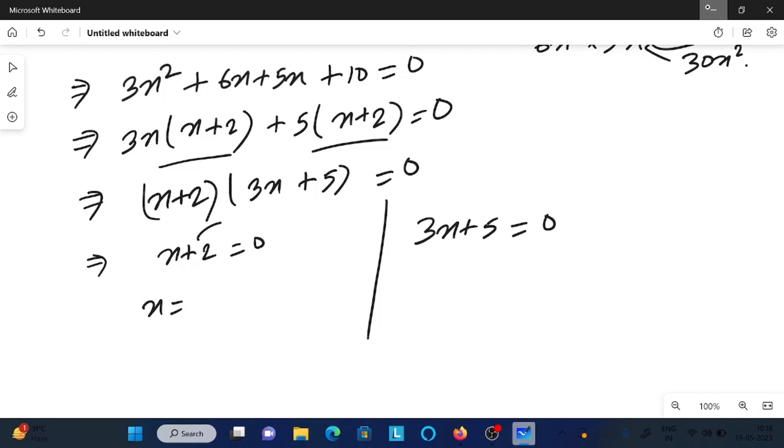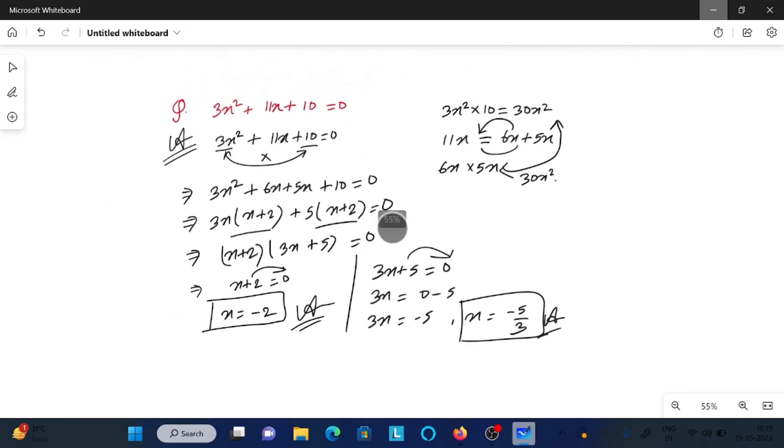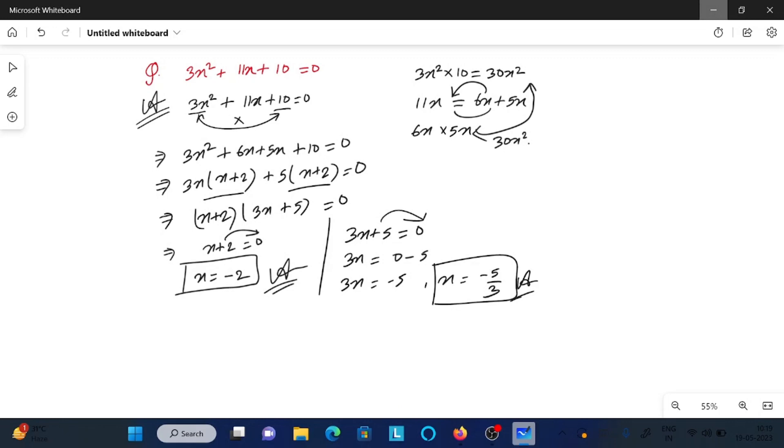Then we can write x plus 2 equal to 0, and 3x plus 5 equal to 0. So x equals 0 minus 2, that is minus 2. This is the first answer. And 3x equals 0 minus 5, so x equals minus 5 by 3. This is the other answer.